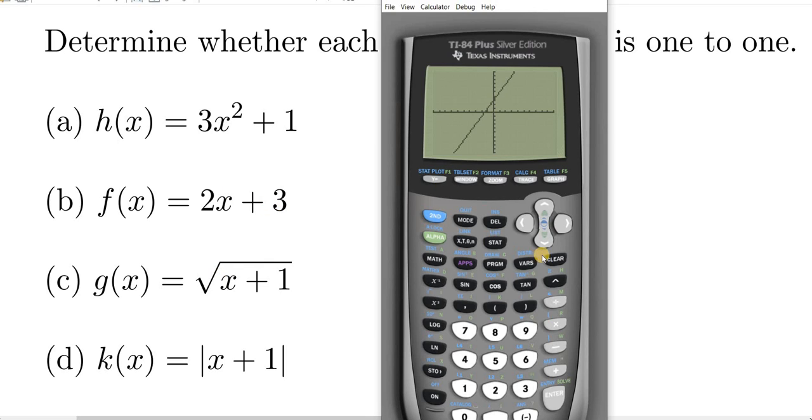Let's go ahead and do g. So g has a square root, so to access the square root, you have to hit the blue square root key. In order to do that, you first have to hit the second key, so second square root x plus 1.